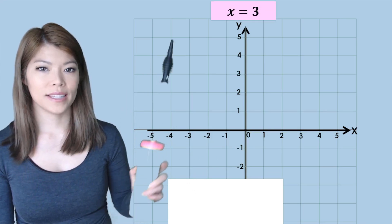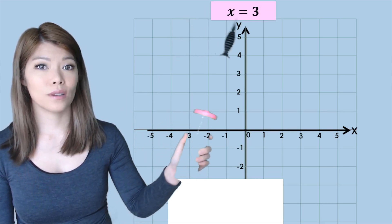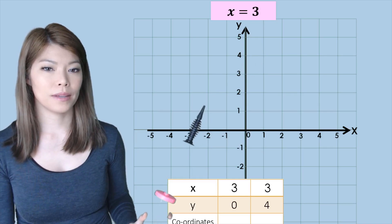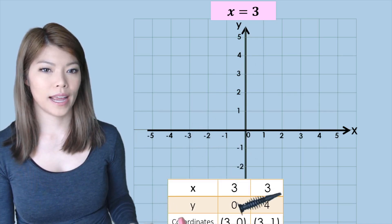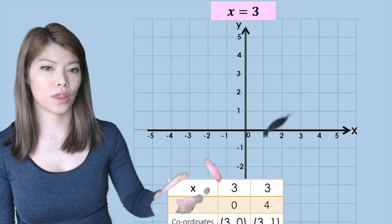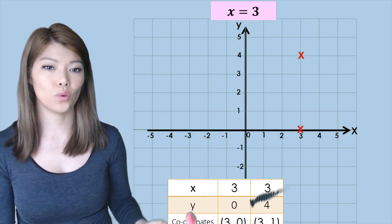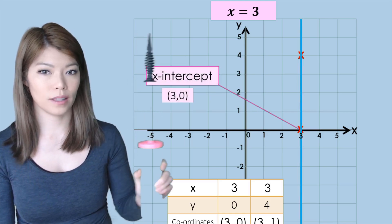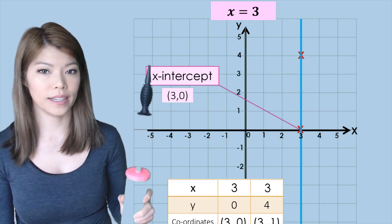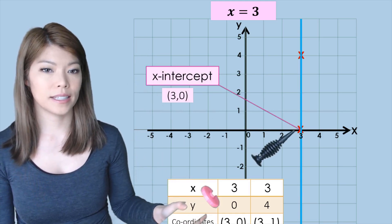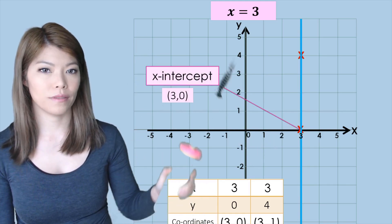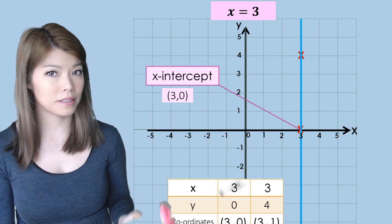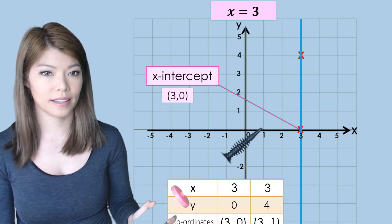Whereas if we had x equals a number value, then x being 3 all the time would give a vertical line — a line going that way. The x-intercept will be whatever that number is, so no y-intercept this time, just the x-intercept.